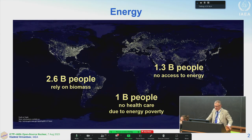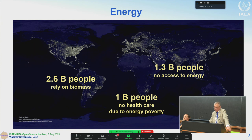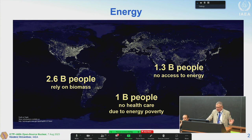Let me start very briefly with the energy situation in the world. About 1.3 billion people — this is the situation for 2020 — don't have access to energy at all, not electricity. One billion people don't have access to healthcare due to energy poverty. And 2.6 billion people rely on biomass, like our grandfathers thousands of years ago. Still, a significant part of the world has no access to electricity like we have here in developed countries.